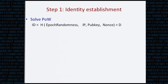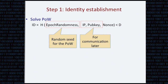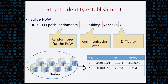In step one, we use proof of work to allow nodes to establish their identities. Proof of work limits the number of identities a node can create to the amount of computation it has. The node searches for a nonce value such that the output of the hash function satisfies a certain condition. The hash function takes several inputs, one of which is the epoch randomness — I will discuss how we generate this later. The node also puts its IP and public key into the hash function, for communication purposes. D is a global parameter that determines how much work a node must do to establish its identity. The output of this step is a list of ID, IP, and public key of all nodes in the network.